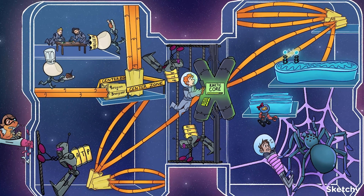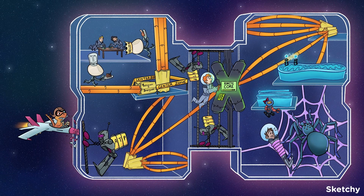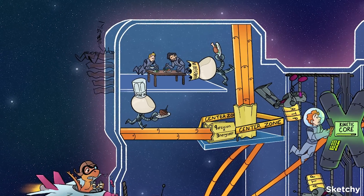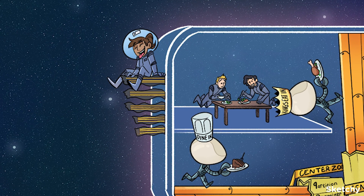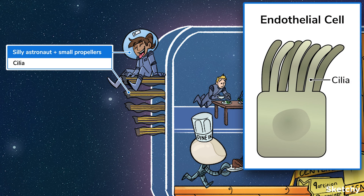Snap your oxygen tanks on, because we're taking a quick gander outside to look at some external microtubule structures. These structures are called motile structures because they are involved in cell movement. We'll take a look at two types — cilia and flagella — but note that only certain types of cells have motile structures. This silly crew member riding the small spikes on the spaceship represents cilia. Cilia are hair-like structures made of microtubules that move materials on the surface of the cell. Cilia are commonly found in respiratory epithelial cells where they help clear mucus out of the lungs.